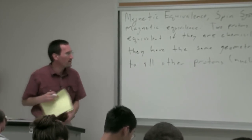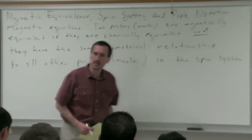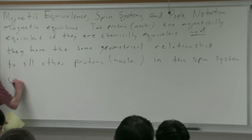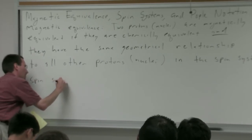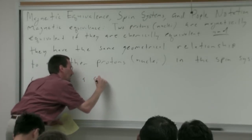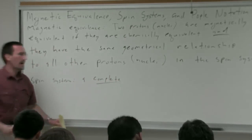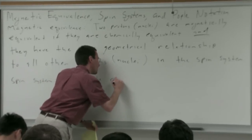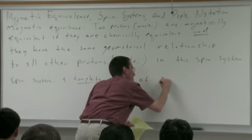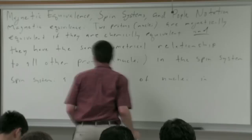This brings up one other concept: the question of what is a spin system. A spin system is just a complete set — meaning all of the nuclei — in which members are coupled.